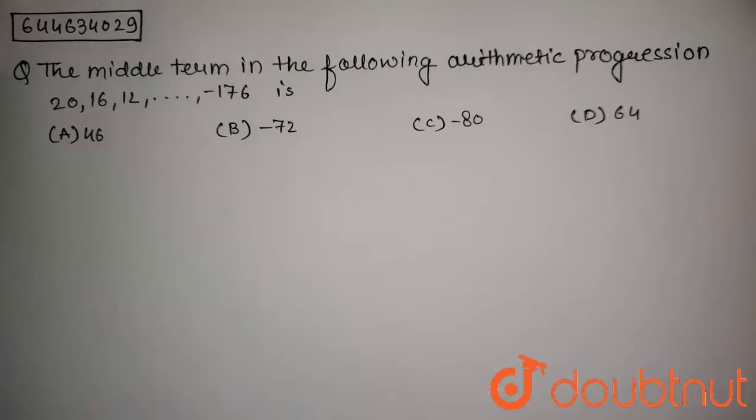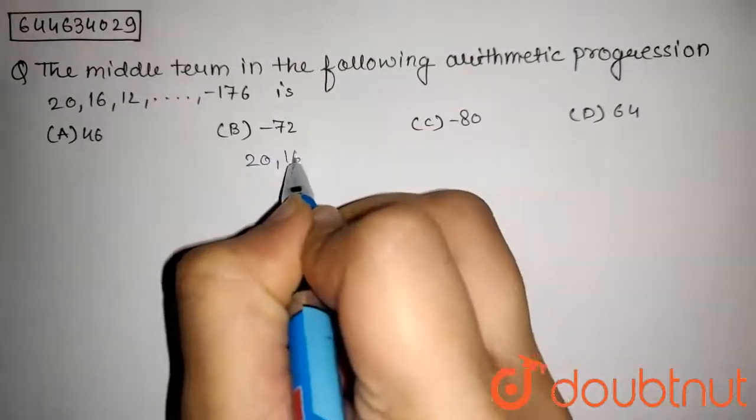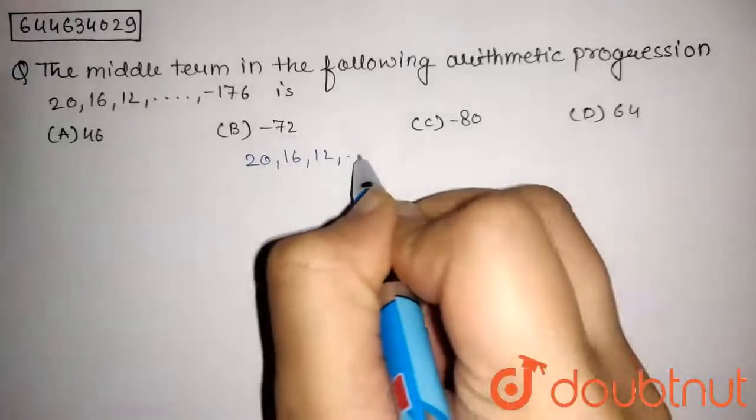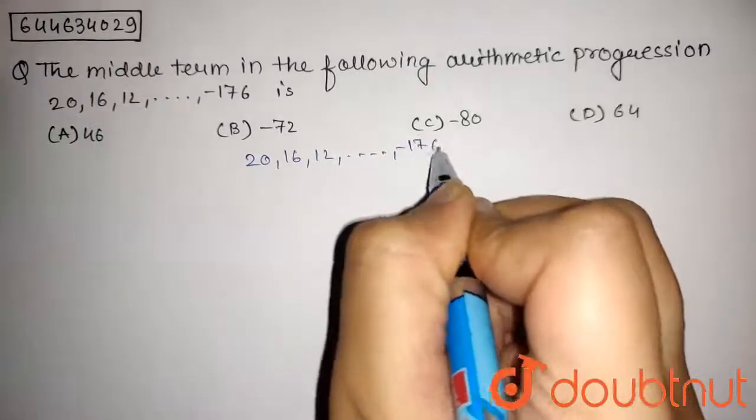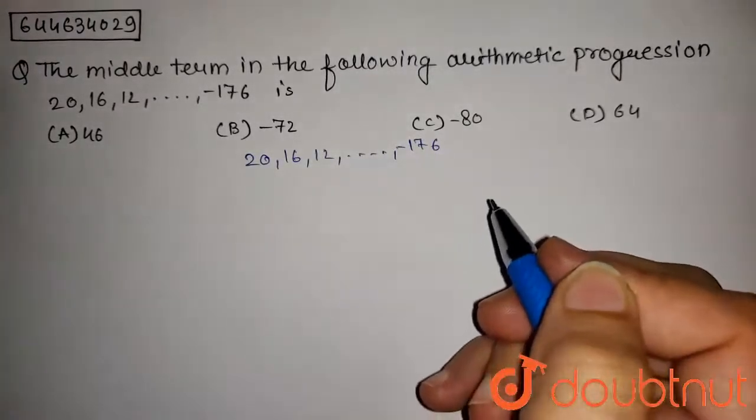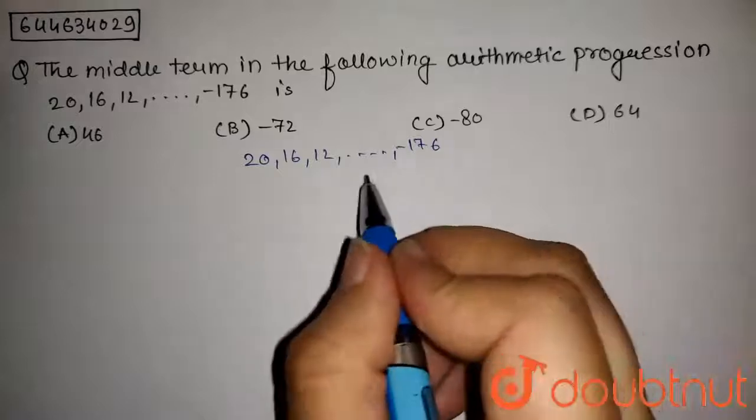So in this question we have given the series 20, 16, 12, and so on till -176. And we have to find the middle term of this AP.